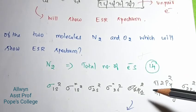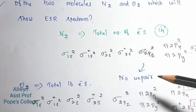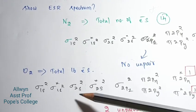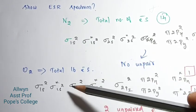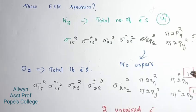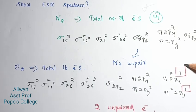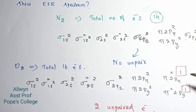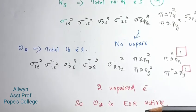So, no unpaired electrons. Total number of electrons is 16: 1s2, 2s2, 2p6, 3s2, 3p6 — that gives 16. Then there are 2 unpaired electrons, so O2 is ESR active.